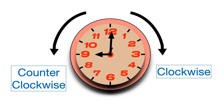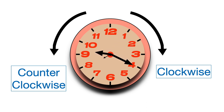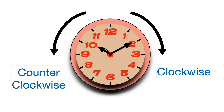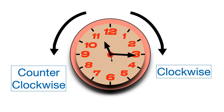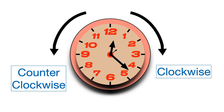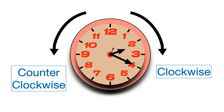The short hand points the hours of the time and it moves from the top to the right, then down, then to the left, and back up to the top — pointing the numbers one to twelve. This direction is called clockwise. The long hand points the minutes of the time, and the very tiny hand points the seconds of the time. All the hands of the clock are moving clockwise; the opposite direction is called counterclockwise.